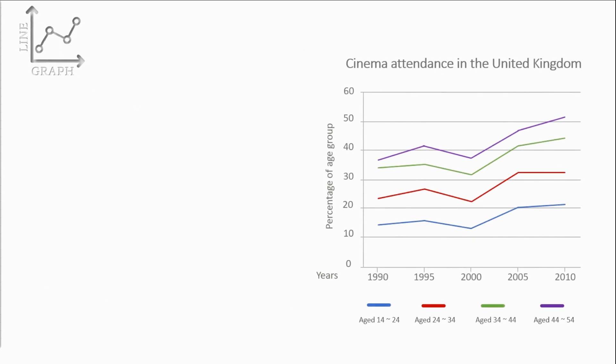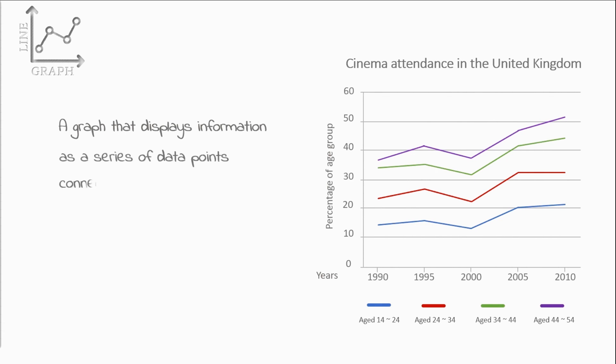As everyone knows, a line graph is a graph that shows information as a series of data points connected by straight line segments, and it is also called a time graph, which means that a line graph is a dynamic graph. However, a static line graph is very rare.